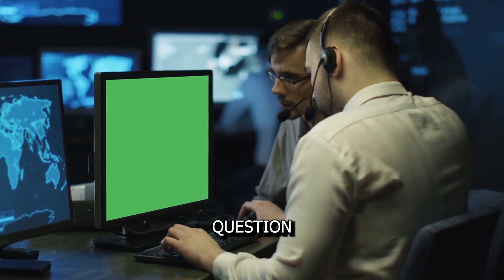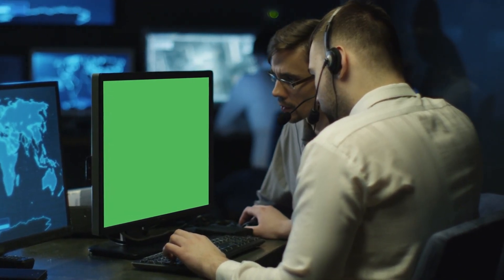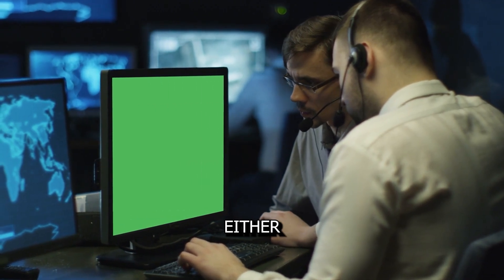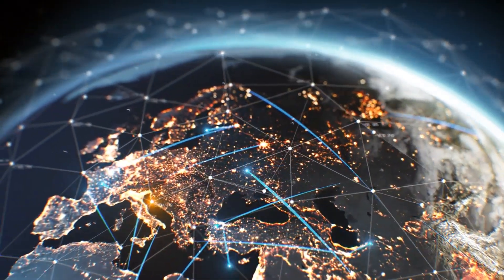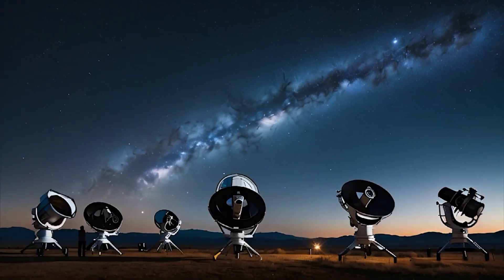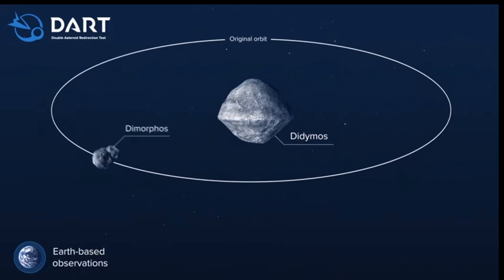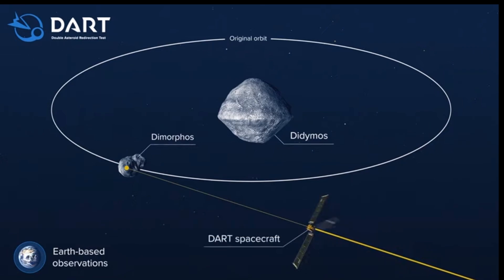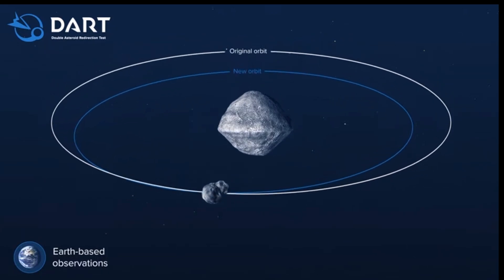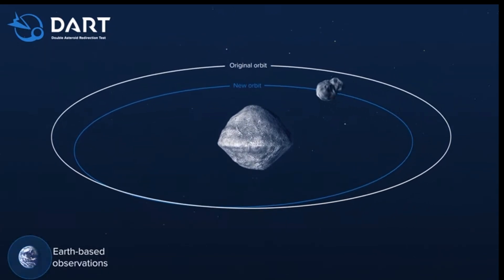The defence question. Asteroids like these remind us we're not invincible, but we're not helpless either. Protecting our planet from these cosmic threats is a global effort. Telescopes constantly scan the heavens while missions like NASA's DART test have demonstrated the possibility of asteroid deflection, proving we may have the power to alter the trajectory of a celestial body.